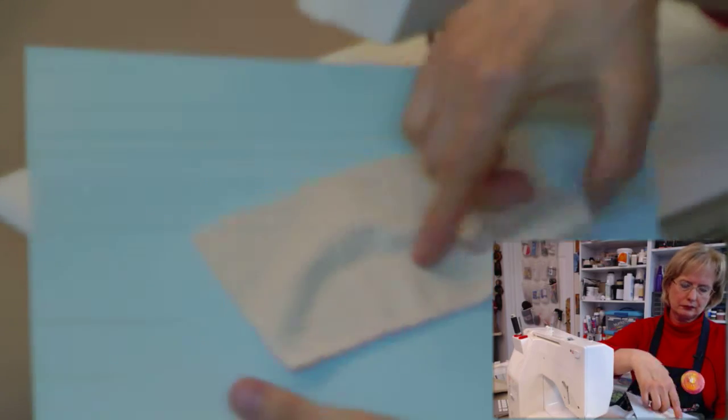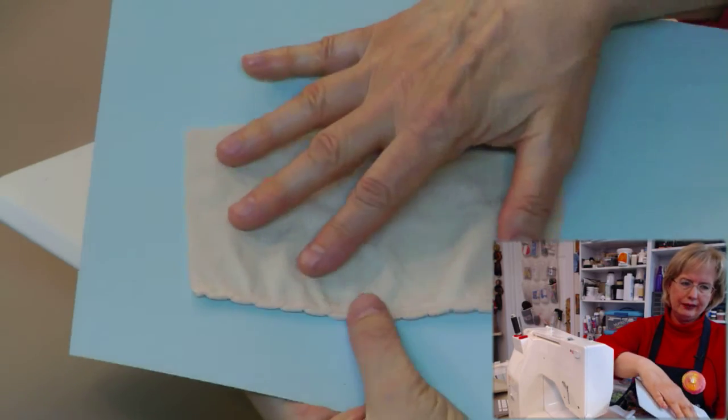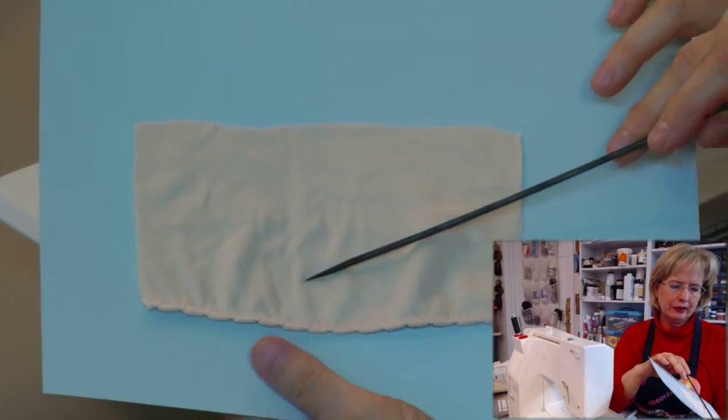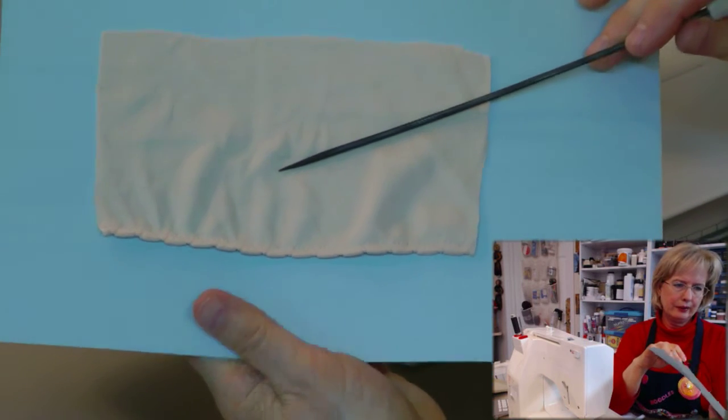So shirt tail hem. And then the last one is a shell edging. And this is the shell edging right here, right down here on the bottom of this.